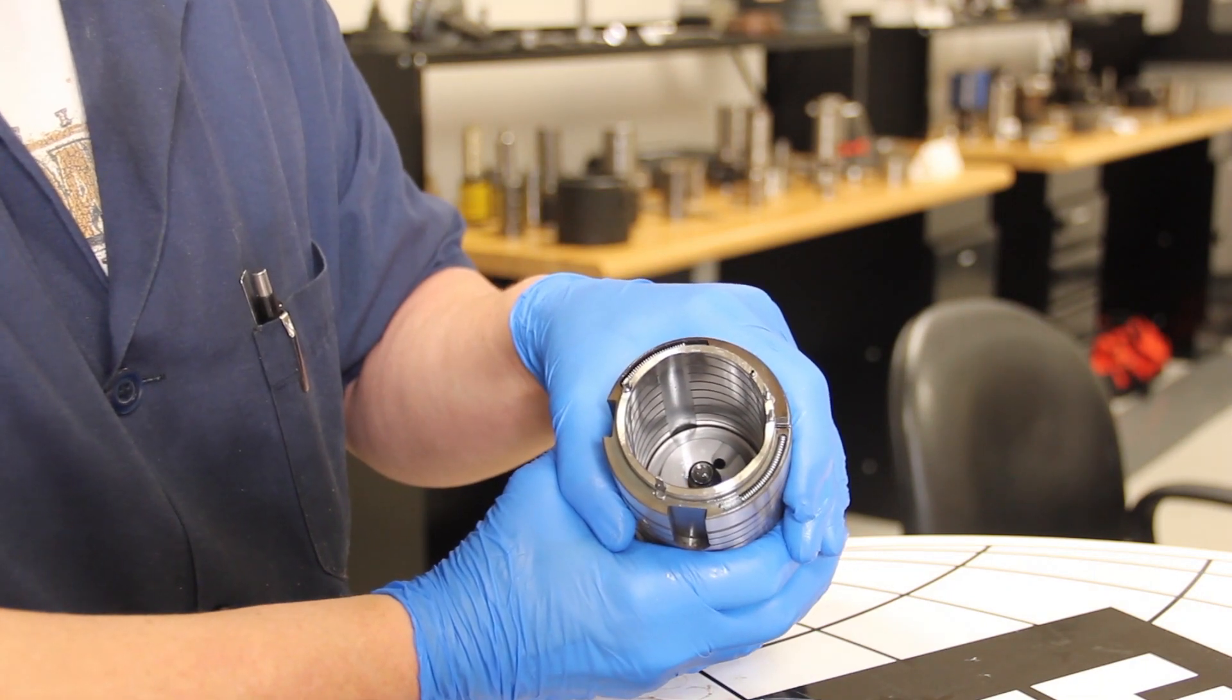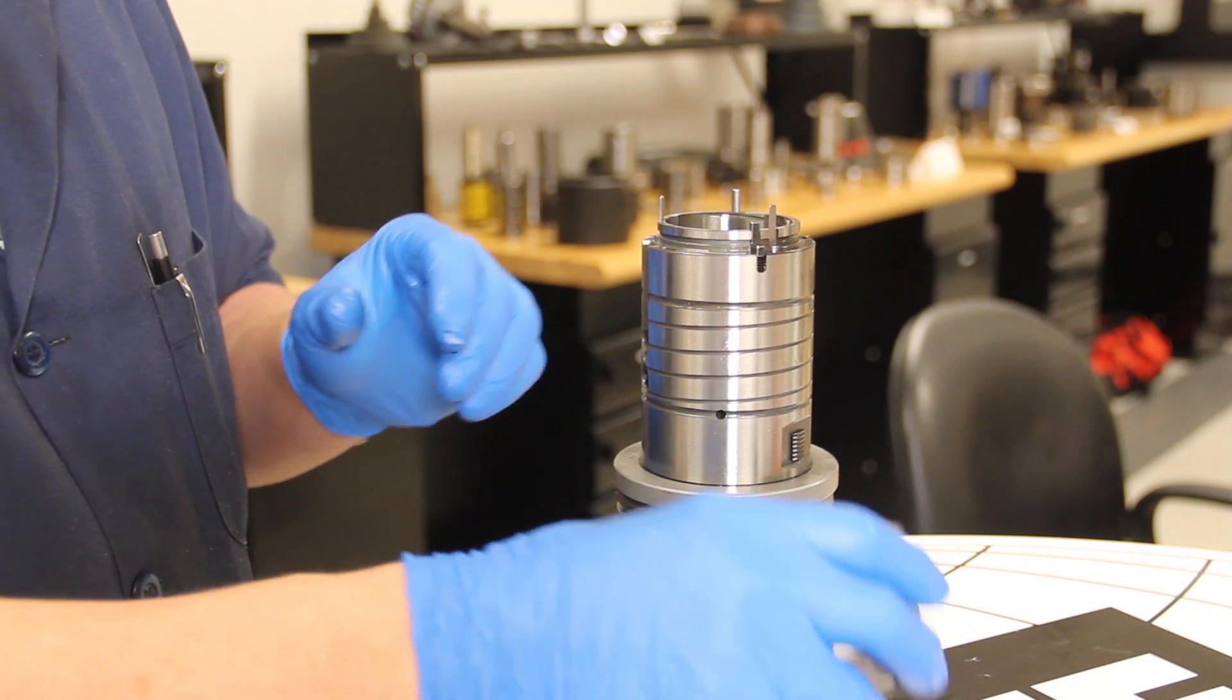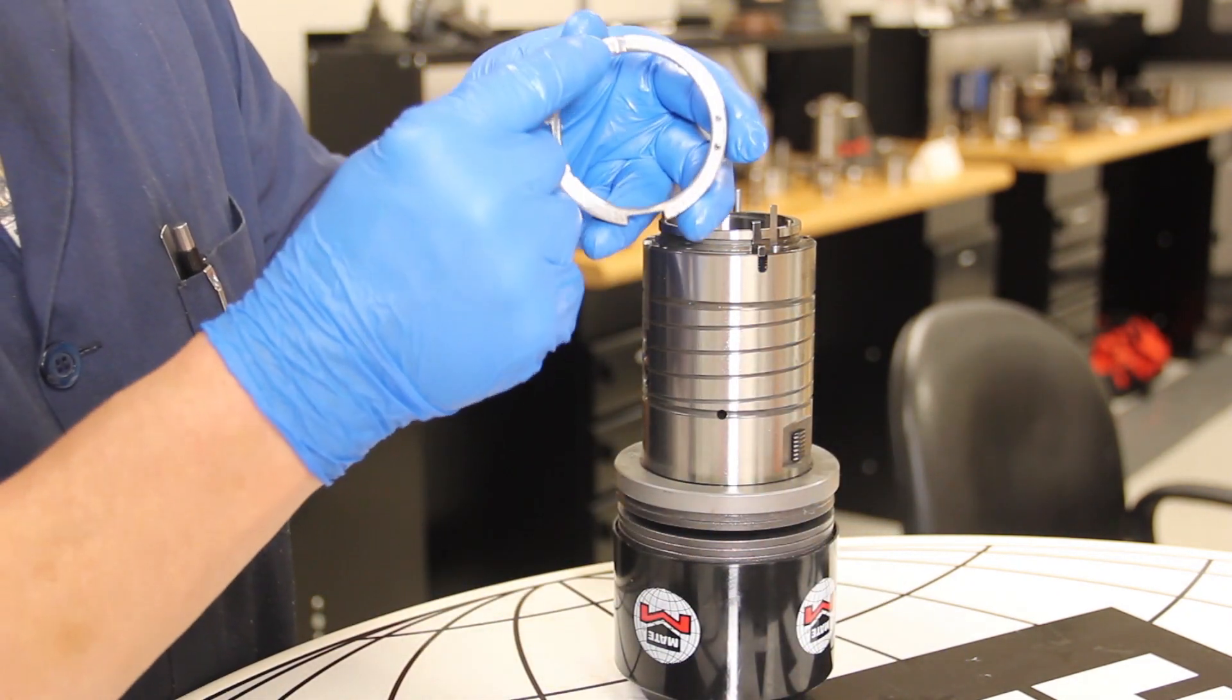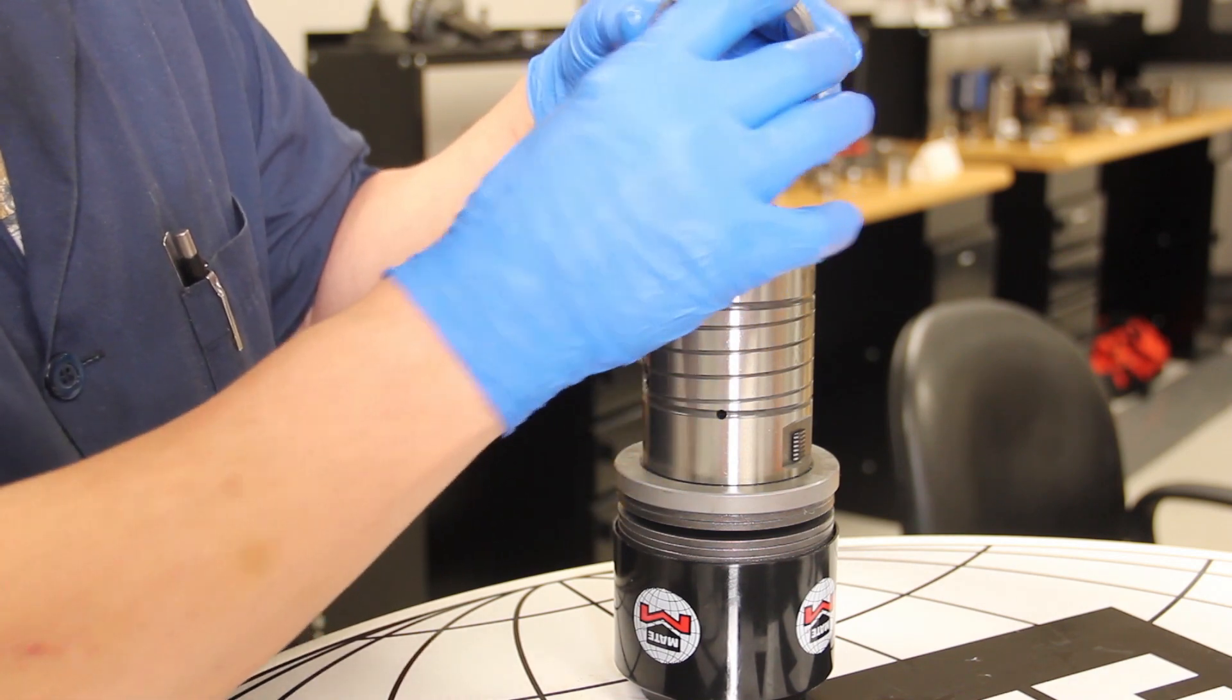Now we need to align the release button and the ejector pins with the lock ring. Push down and turn counterclockwise while keeping pressure on the lock ring.